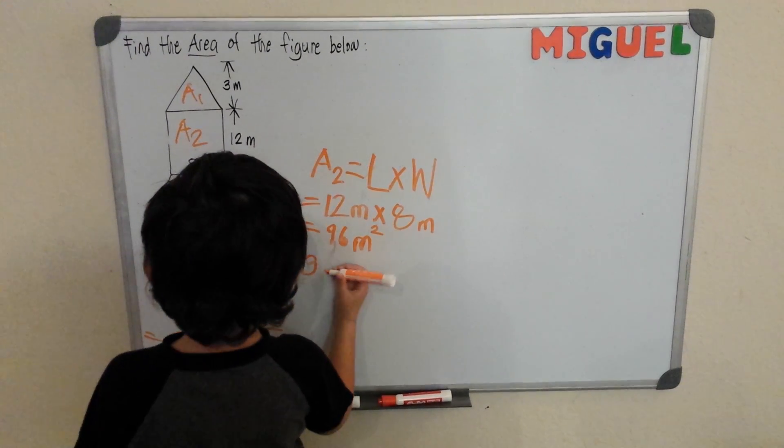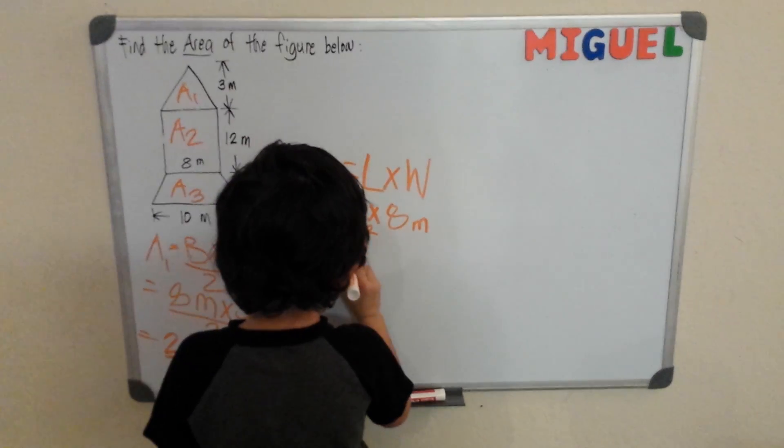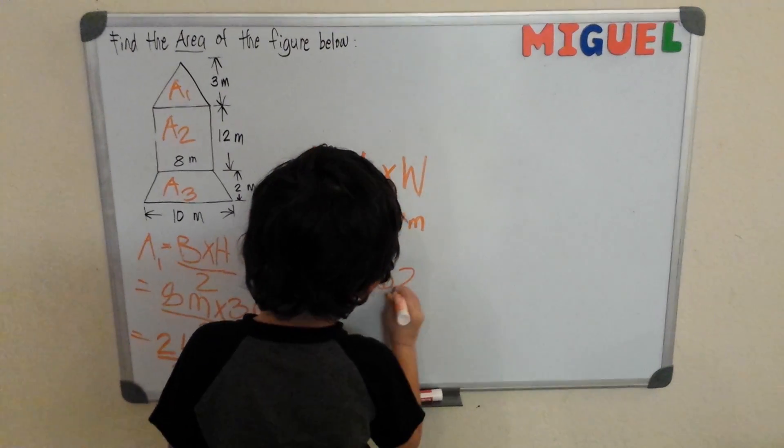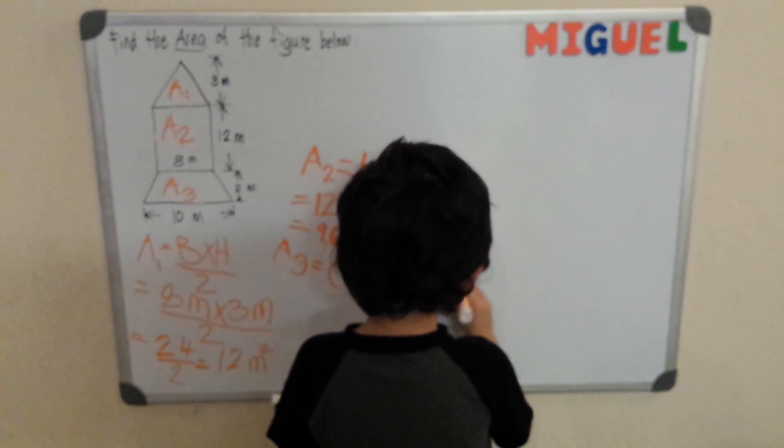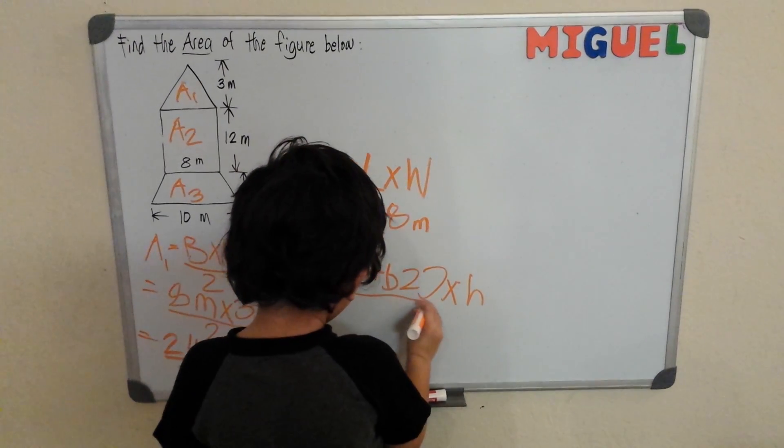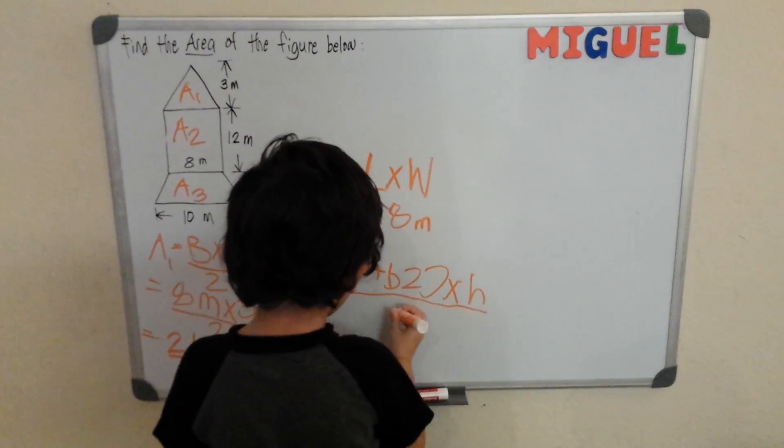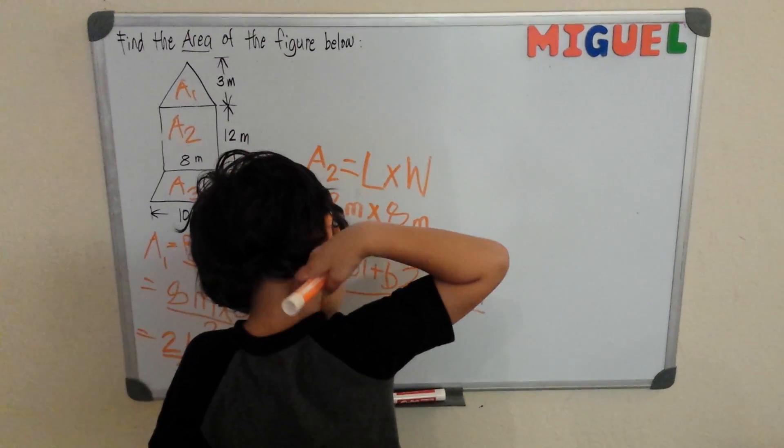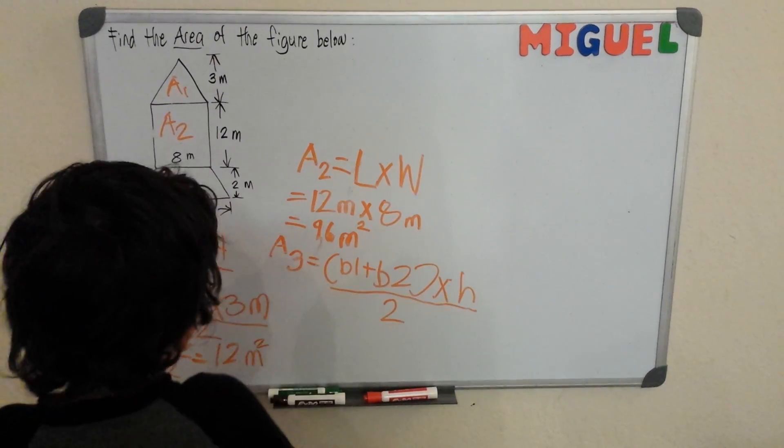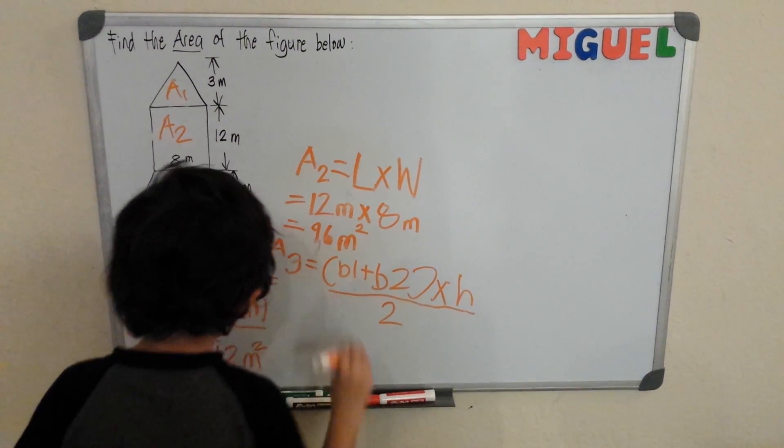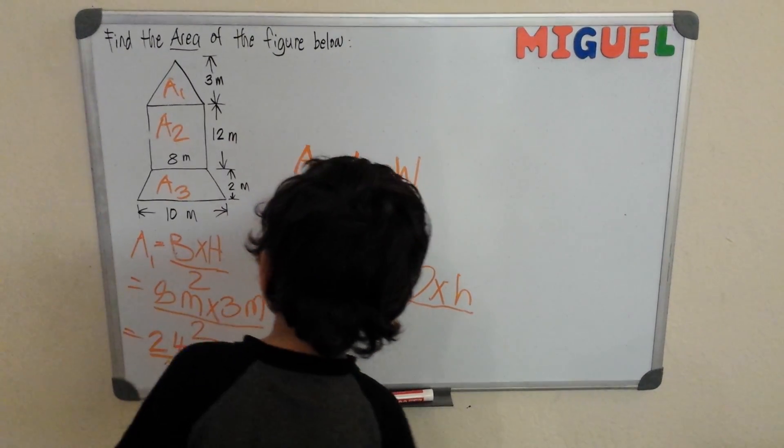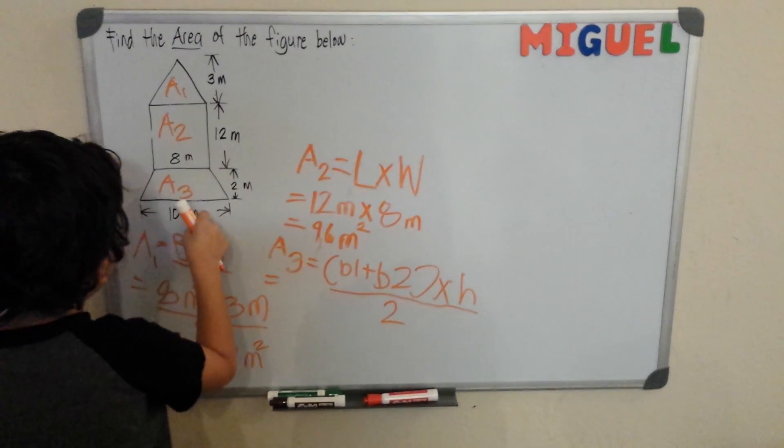Our area 3 is B1 plus B2 times height divided by 2. Now, what's our B1? What's our B2? This is our B1, this is our B2.